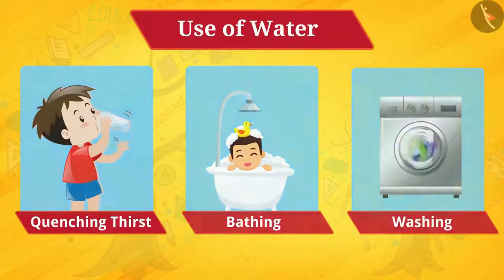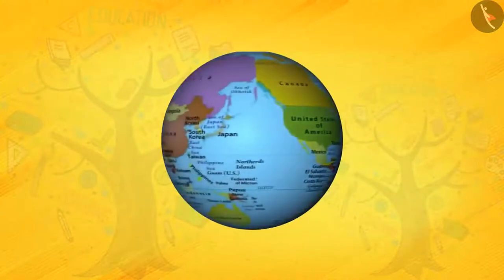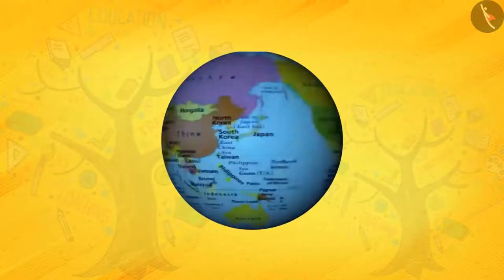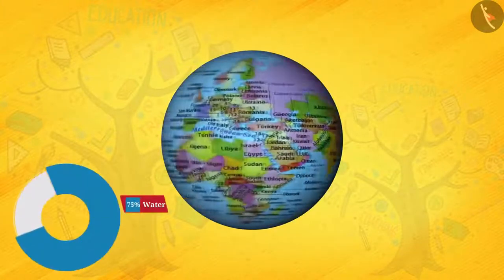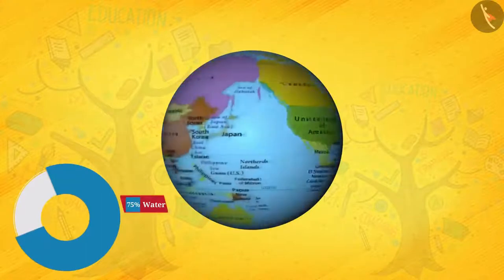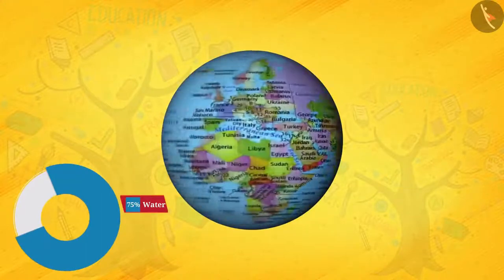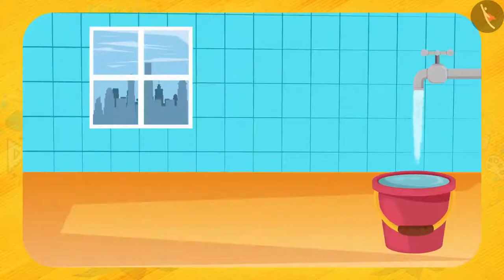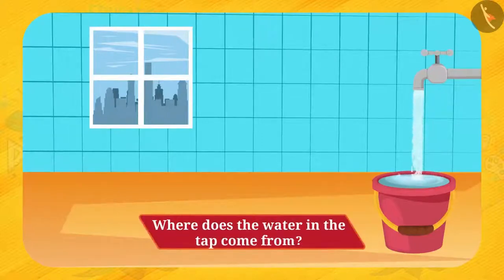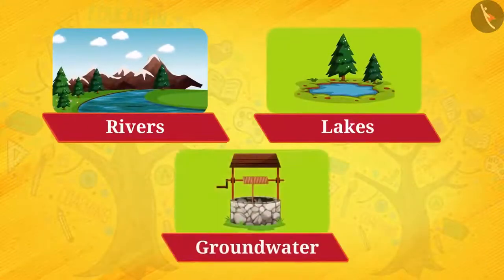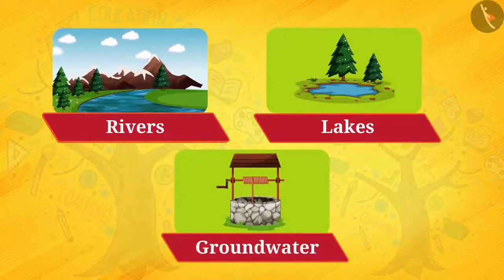Do you know how much water exists on earth? The blue colored part you can see is water and it is above 75%. Therefore, 75% of the total surface of the earth is covered by water. Where does water come from at your house? From the tap? But where does the water in the tap come from? Water is drawn into the tap from nearby rivers, lakes, and groundwater. So these are the sources of water.